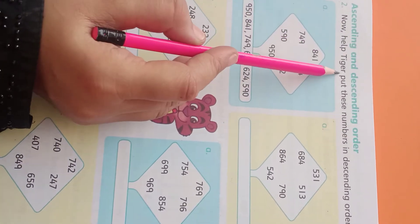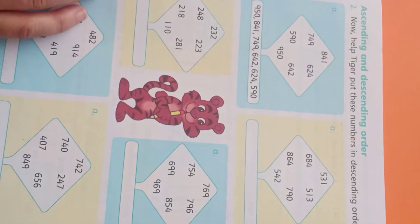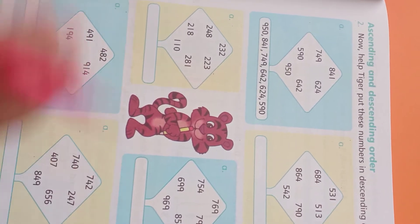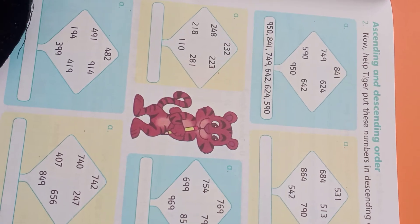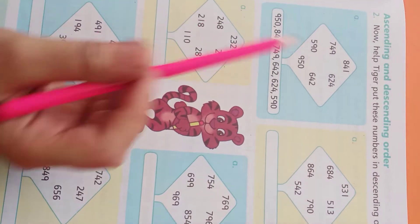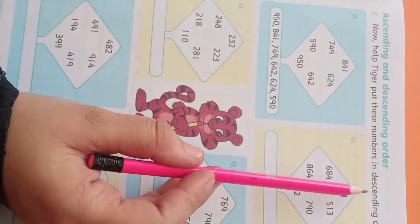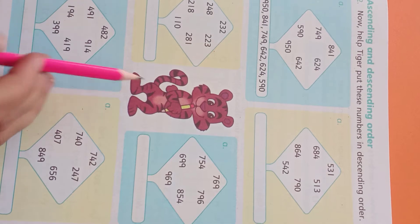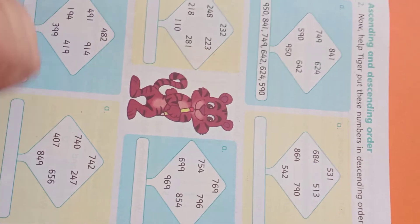Now, help Tiger put these numbers in descending order. On the previous page number 20, we have studied that we need to help out the ascending order, that means in which way it goes to the small amount. Now we are saying here that if we help the tiger with descending order, we find out the descending order. What is the descending order? Basically, the tiger is very confused. Let's start and help the tiger.